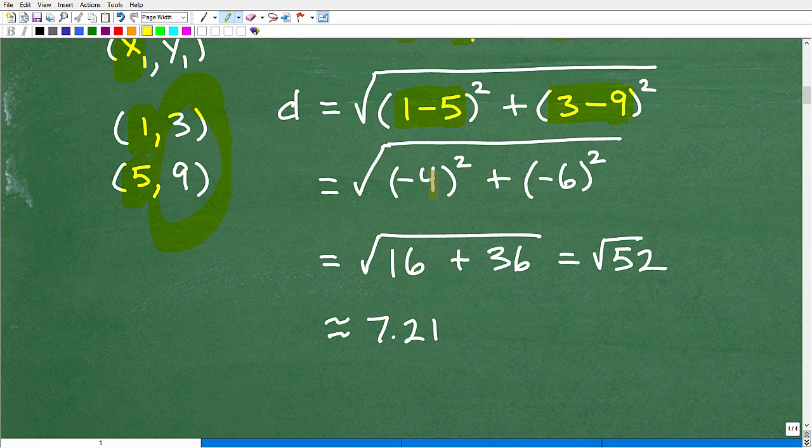So 1 minus 5 is negative 4 squared. Then I have 3 minus 9, that's negative 6, I'll square that. So negative 4 squared, of course, is positive 16. Negative 6 squared, positive 36. Add these guys together, I get 52. So the distance is the square root of 52. And I can go to my calculator. That's approximately 7.21. And that's it. I am done.